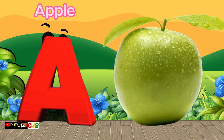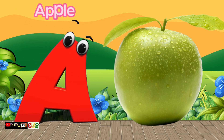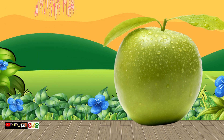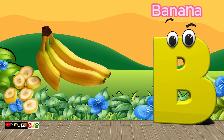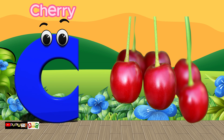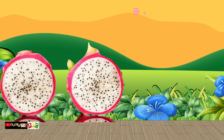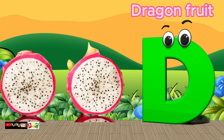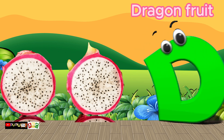A is for Apple, A-A-Apple. B is for Banana, B-B-Banana. C is for Cherry, C-C-Cherry. D is for Dragon Fruit, D-D-Dragon Fruit.